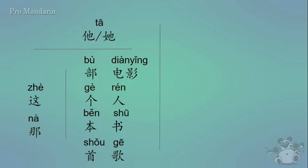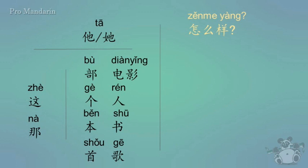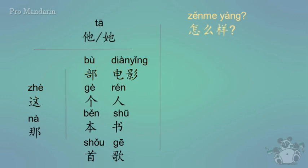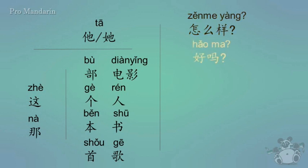The first phrase in the next column is zěnme yàng, which turns this into a question. Zěnme yàng means how was it, or how is this? So when we put it all together, zhè bù diàn zěnme yàng means how is this movie, or is this movie any good? Another way to say that is hǎo ma. Hǎo ma is very similar to zěnme yàng — it means is it good, or how is it?